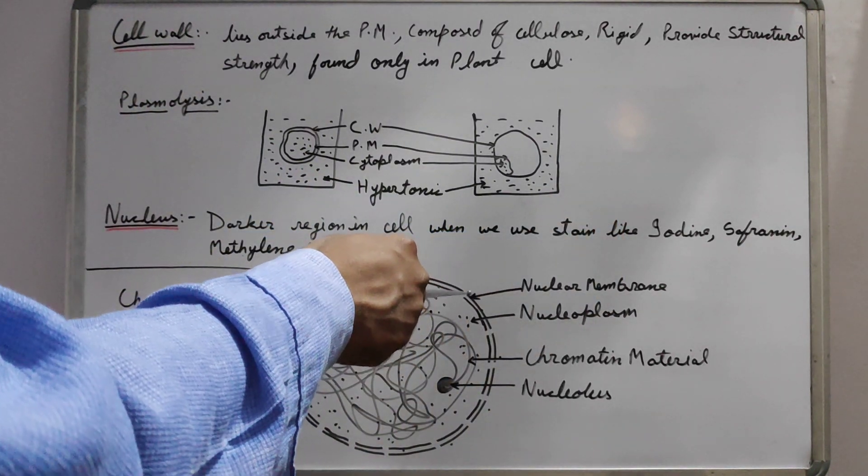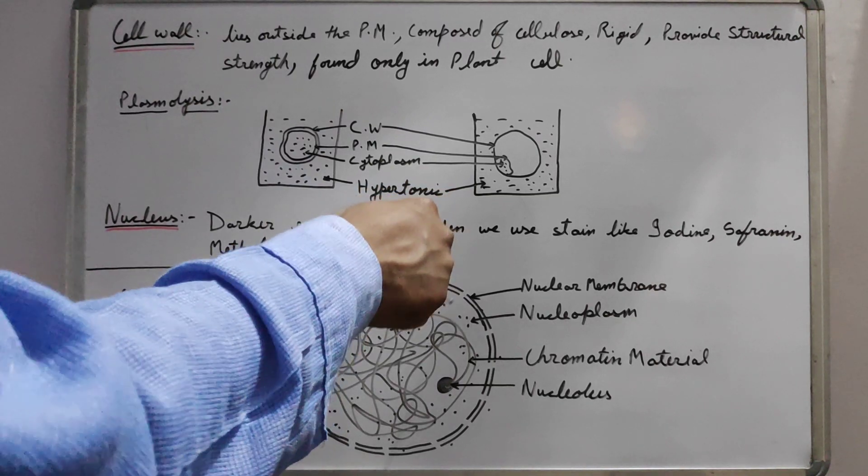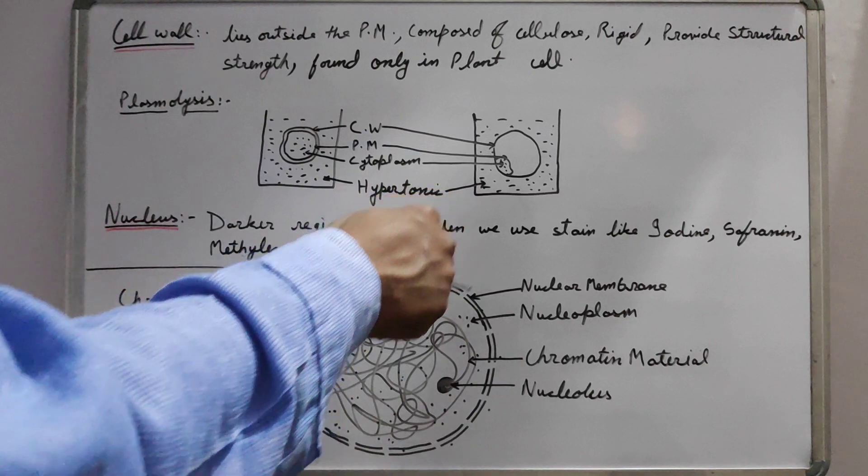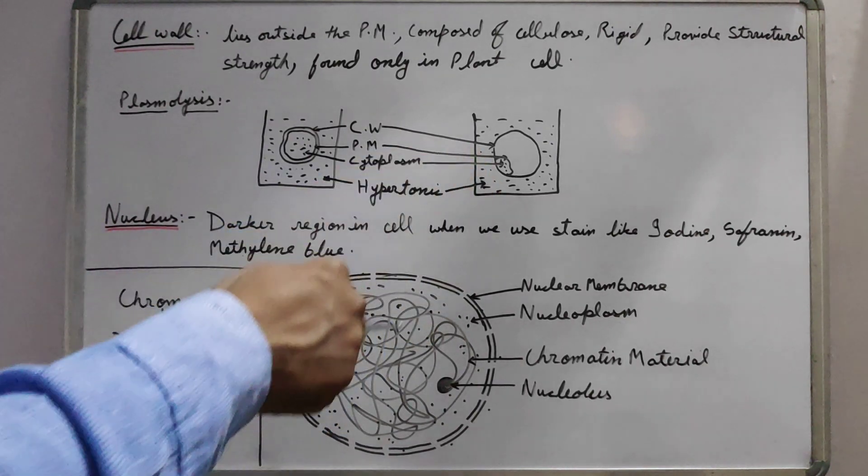This nuclear membrane is porous that allows the material to go inside and to get outside. That means material can easily enter inside the nucleus and some material can easily get outside to the cytoplasm.